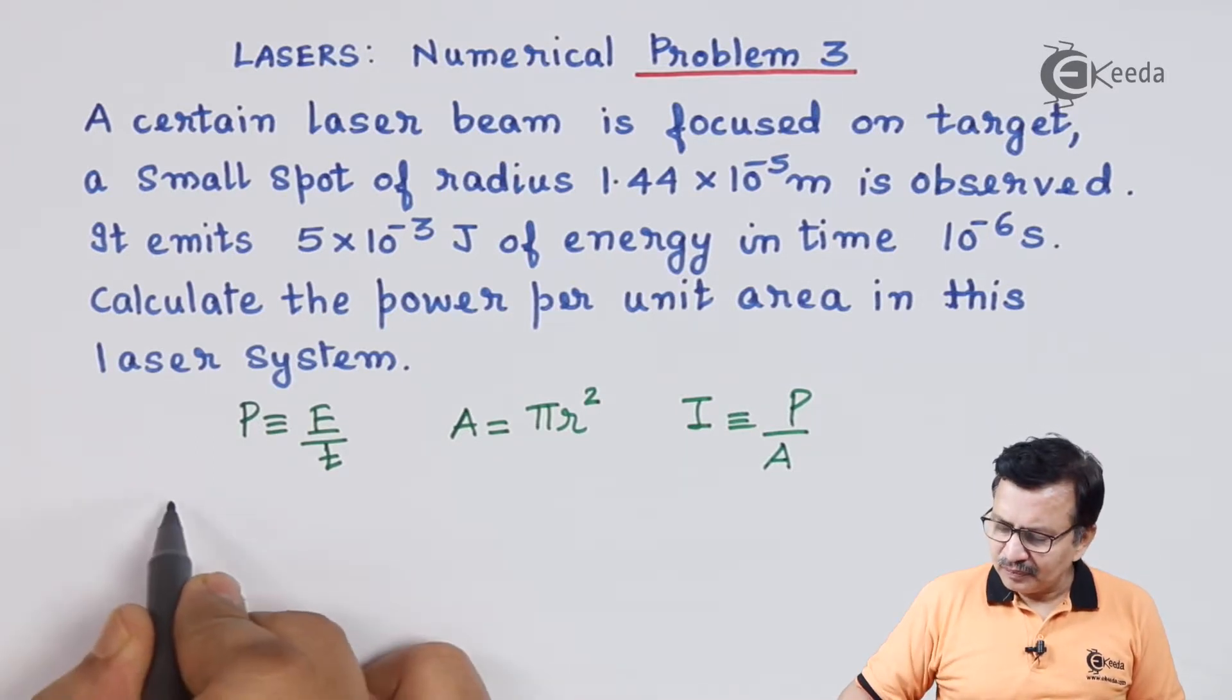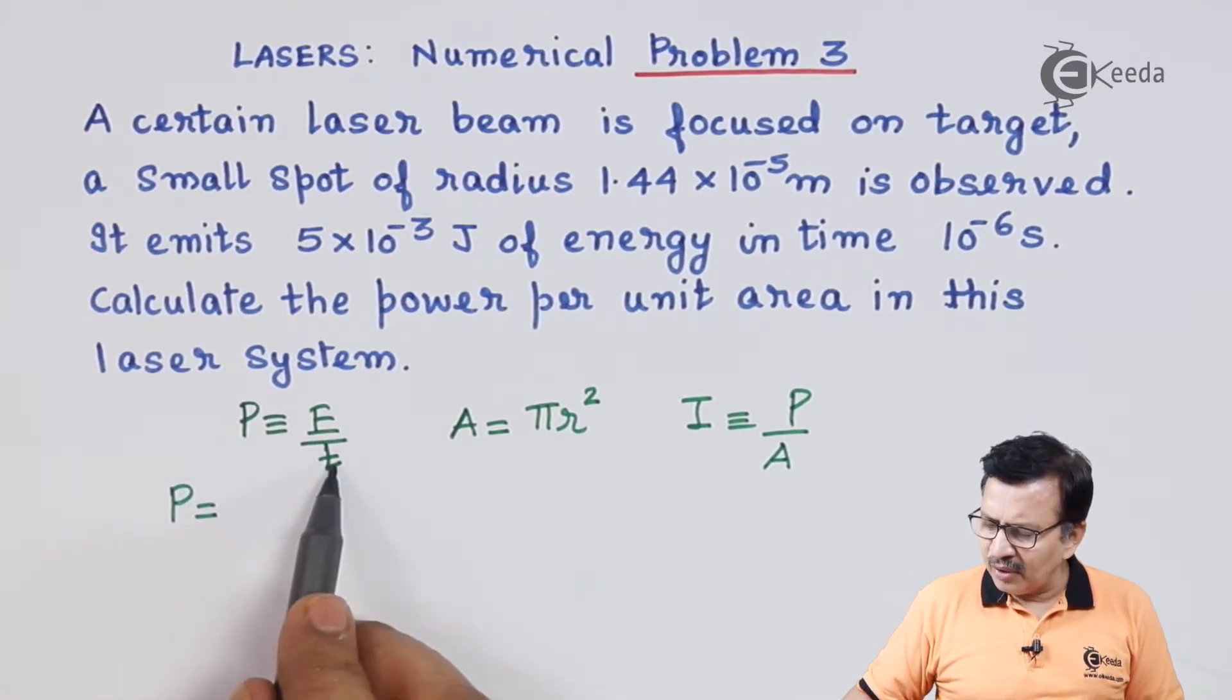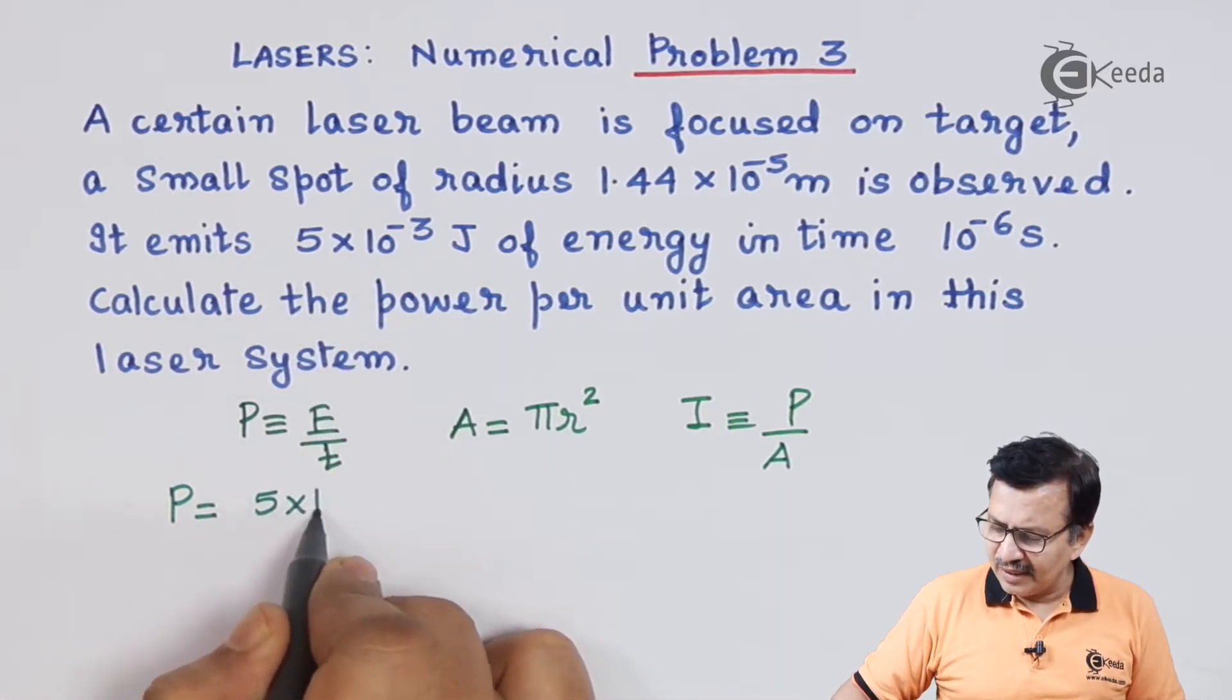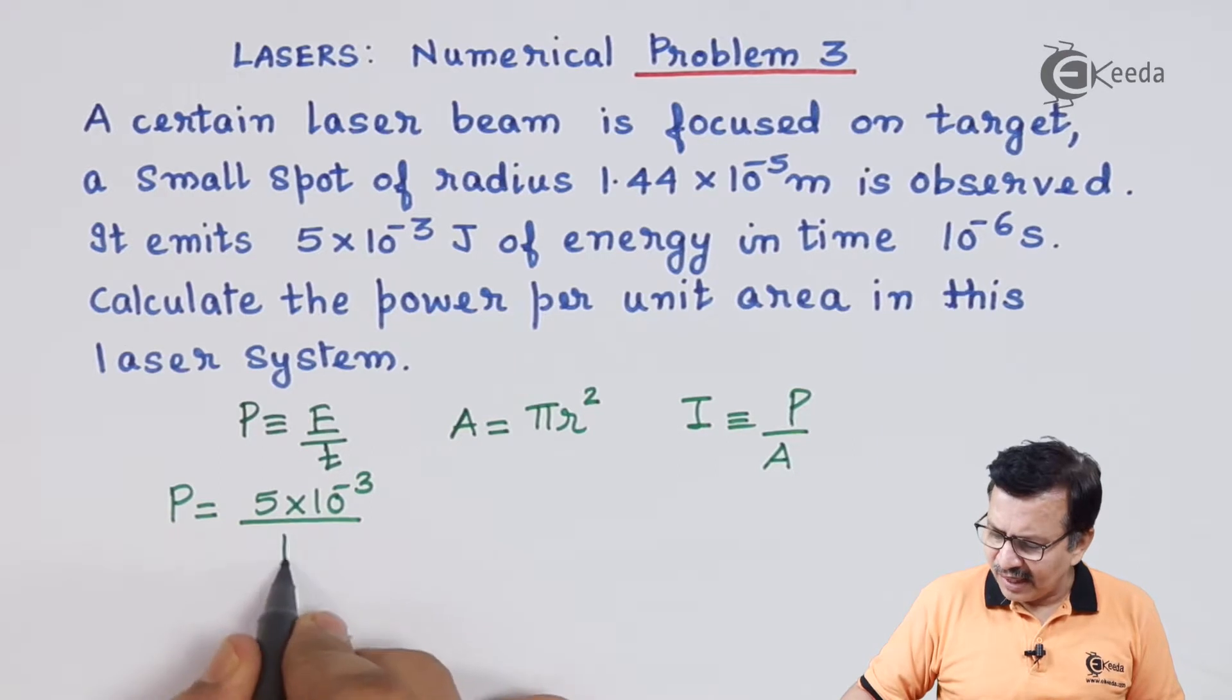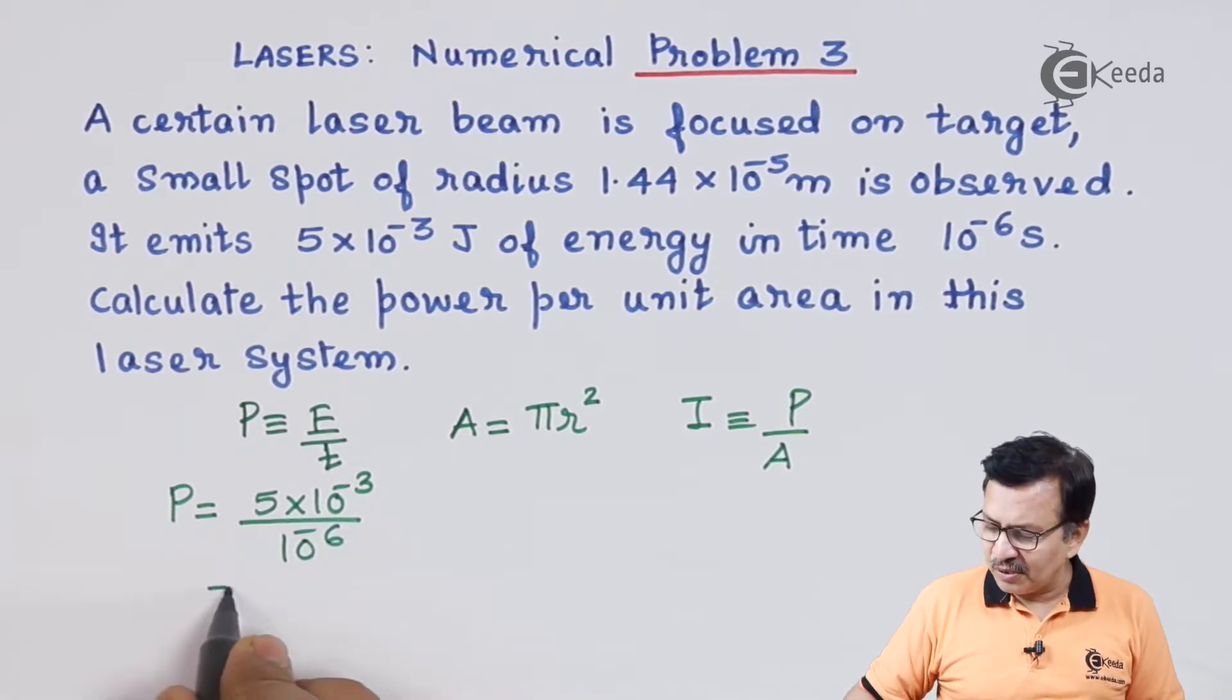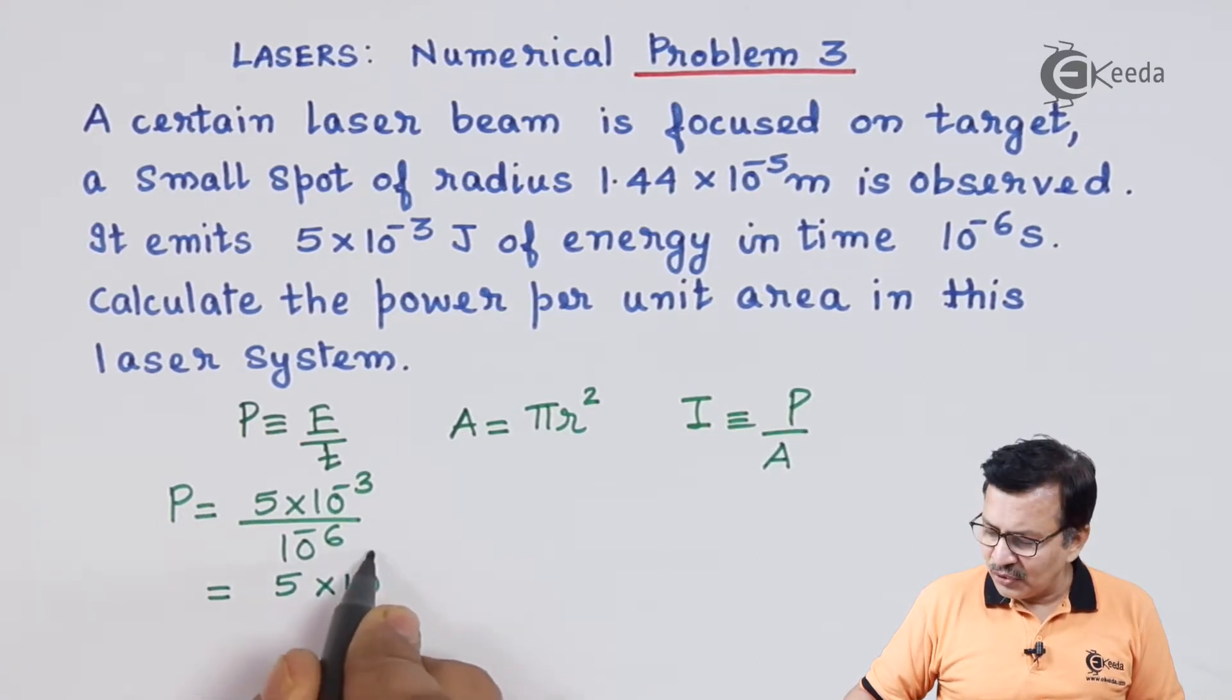The first step, the power is equal to E upon t. So we have already been given the energy which is 5 × 10⁻³ Joules divided by the time period which is 10⁻⁶ seconds. So this turns out to be 5 × 10³.